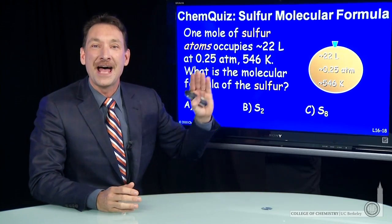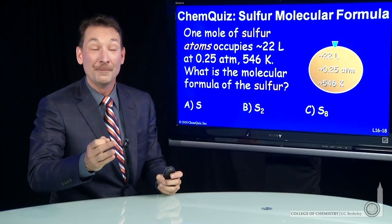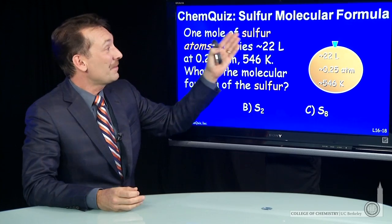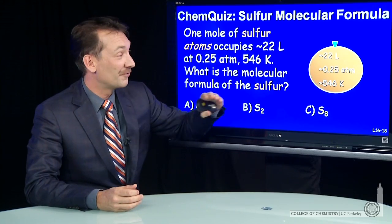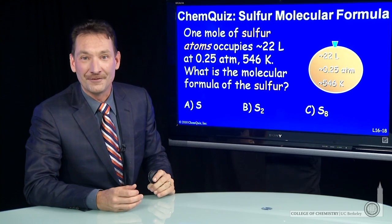Let's look at a sample of sulfur atoms in some form. We're going to trap them in 22 liters, about a quarter atmosphere of pressure, and about 546 Kelvin.